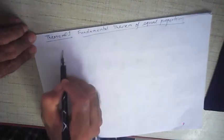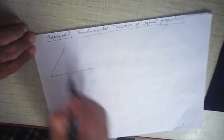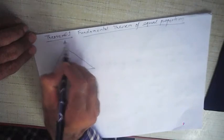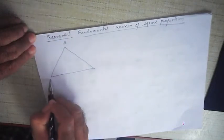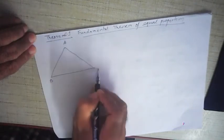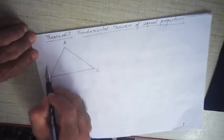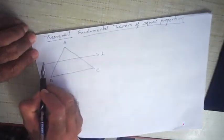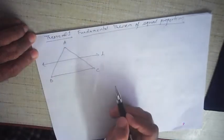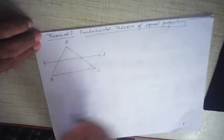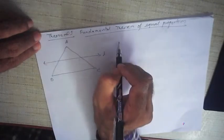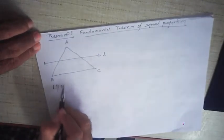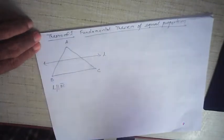Let us understand the Fundamental Theorem of Equal Proportions. Suppose I have triangle ABC, and there is a line L out here. This is line L, and L is parallel to line segment BC — that is the third side BC.